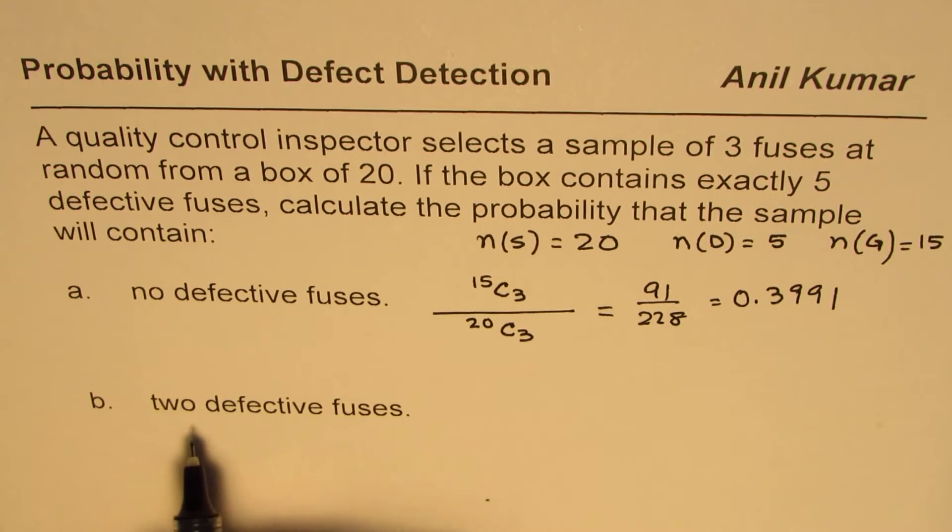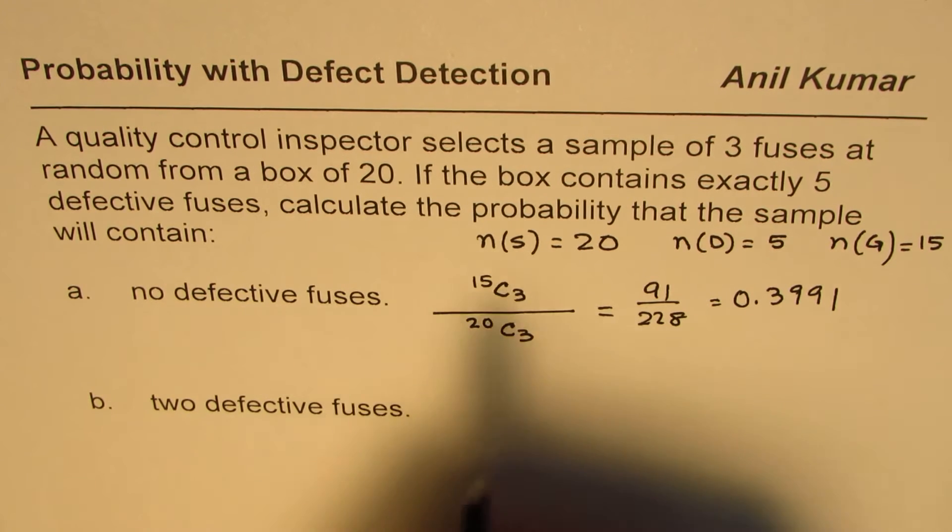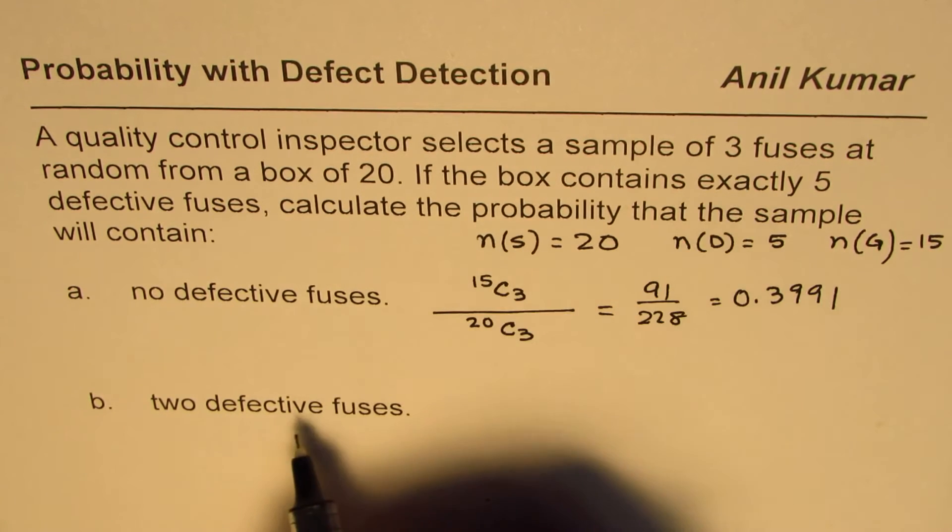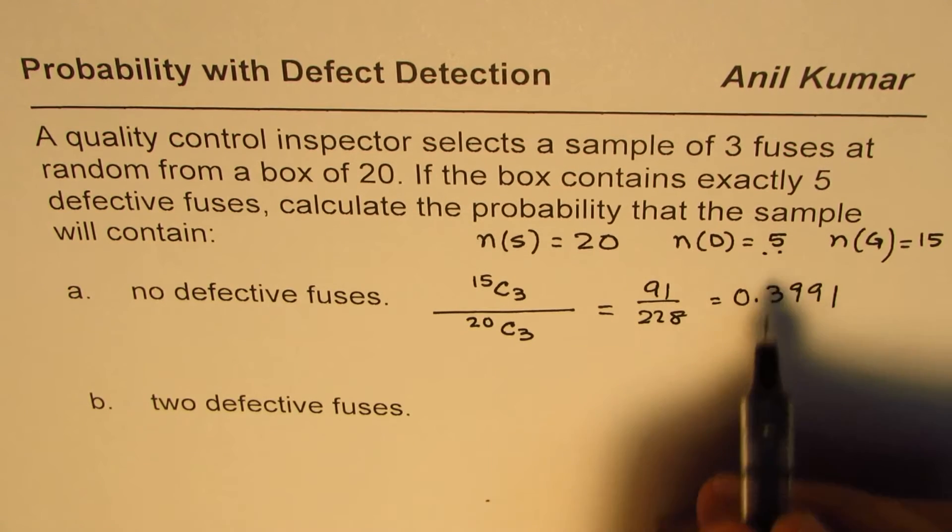In the second case, we are trying to find two defective fuses. So when we say two defective fuses, then out of three selected, two are defective. So these two have been selected from these five.